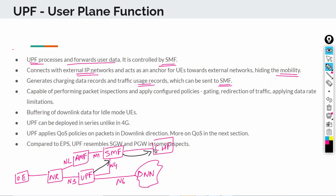There may be logic in the SMF that says whenever a subscriber has used 100 MB of data, send a CDR, or it can be time-based — every minute a CDR for every subscriber. That's up to configuration. The UPF is capable of performing packet inspections and applying configured policies such as gating, redirection of traffic, and data rate limitations.